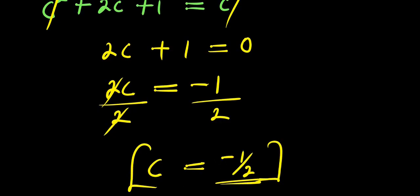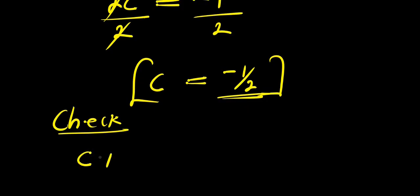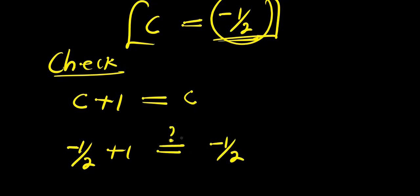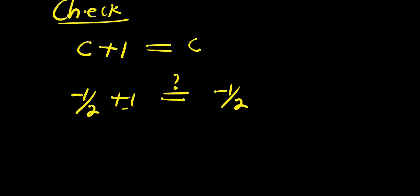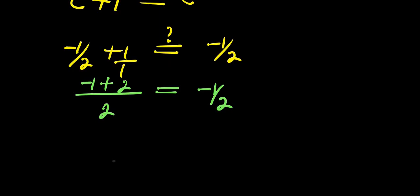Now we check if this value satisfies the original equation √(c+1) = √c. Substituting c = -1/2: √(-1/2 + 1) = √(-1/2). Finding a common denominator of 2, we get √(1/2), and 1/2 is not equal to -1/2.